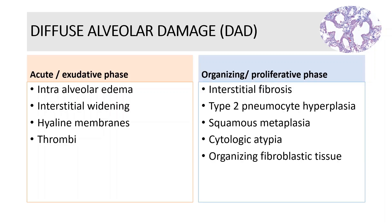The organizing phase is characterized by relatively uniform interstitial fibrosis associated with pronounced type 2 pneumocyte hyperplasia. The hyaline membranes gradually disappear and become incorporated into the alveolar septa. However, residual hyaline membranes may be identifiable depending on the timing of biopsy and the course of the disease. Other features that may be seen are cytologic atypia in the type 2 pneumocytes, squamous metaplasia, as well as organizing fibroplastic tissue seen in the airspaces, particularly the alveolar ducts. The process actually represents a continuum and overlapping features may be encountered.